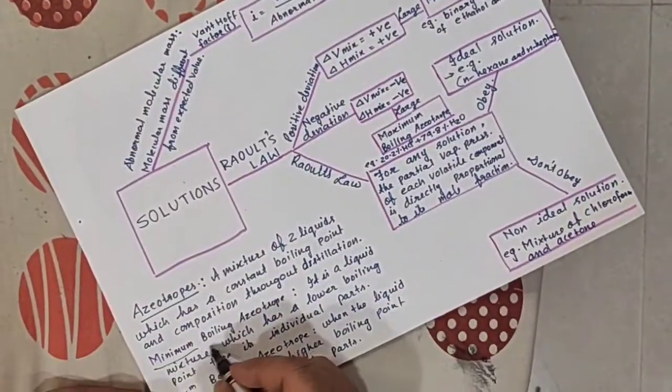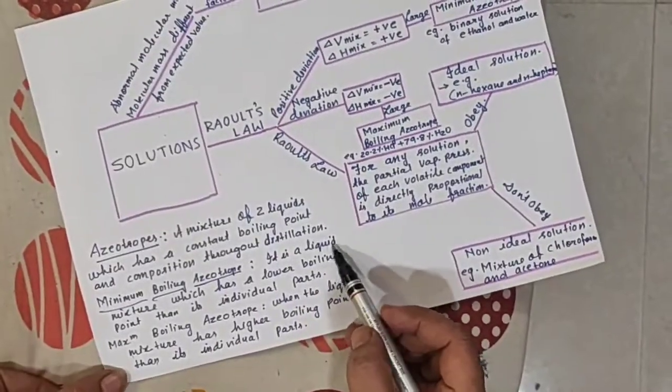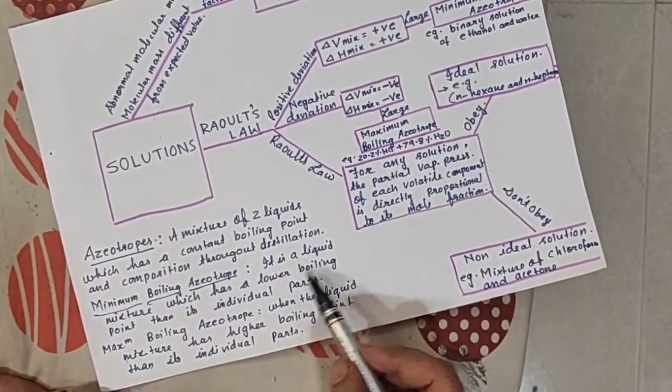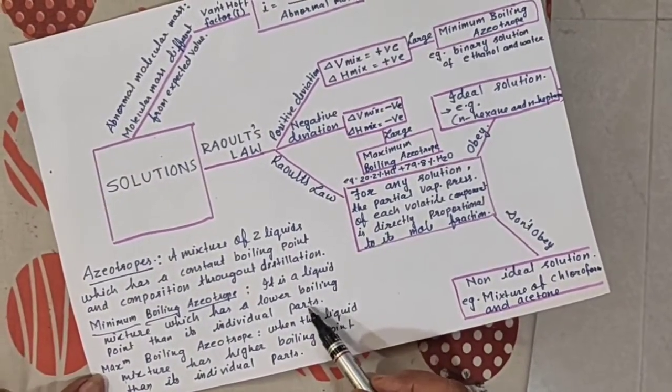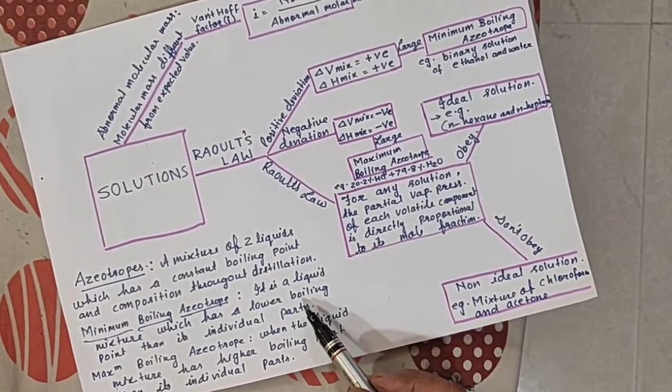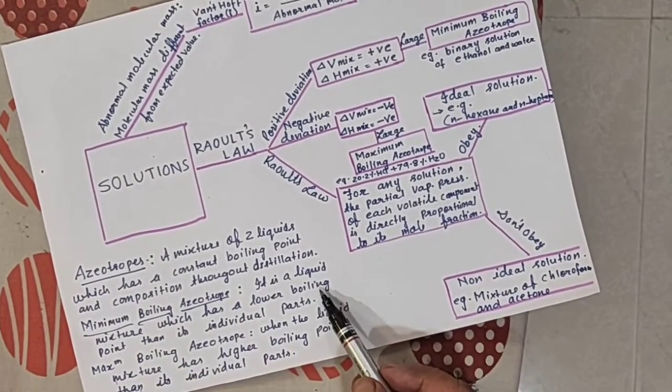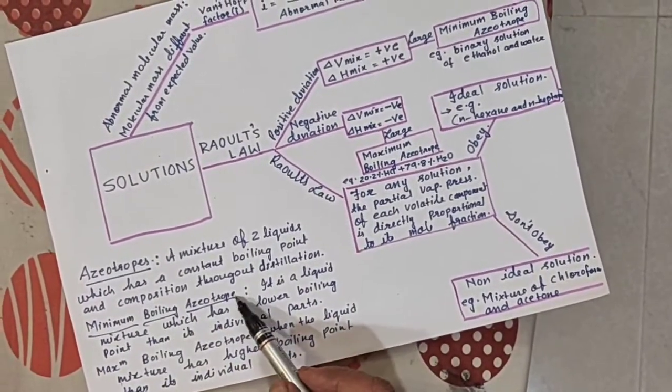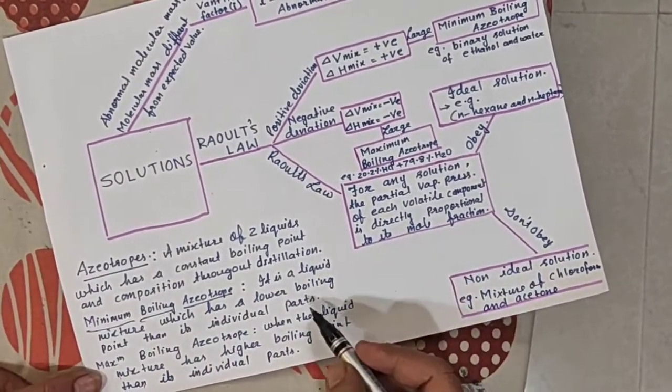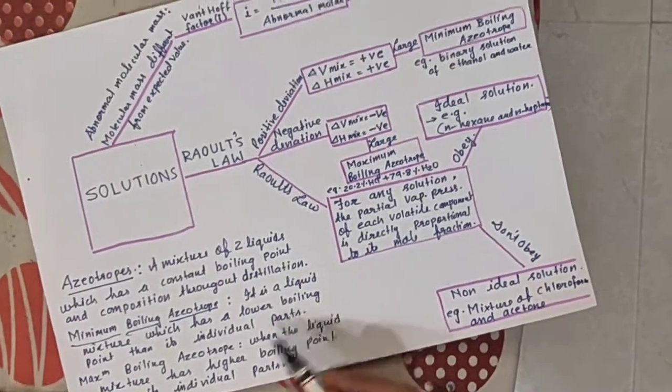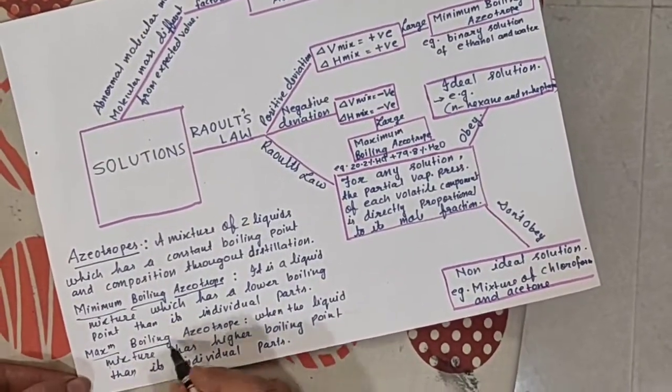What is minimum boiling azeotrope? Minimum boiling azeotrope is a liquid mixture which has a lower boiling point than its individual parts. If it has lower boiling point than the individual parts, then minimum boiling azeotrope. Example: ethanol and water.